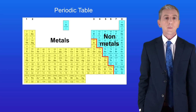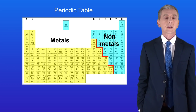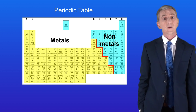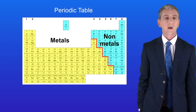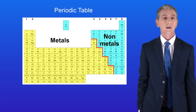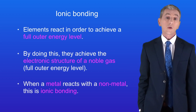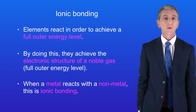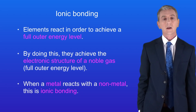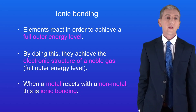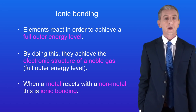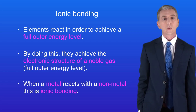If we look at the periodic table we can see that metals are found on the left hand side and non-metals are found on the right. Lots of reactions in chemistry involve a metal reacting with a non-metal, and when this takes place we're seeing ionic bonding.